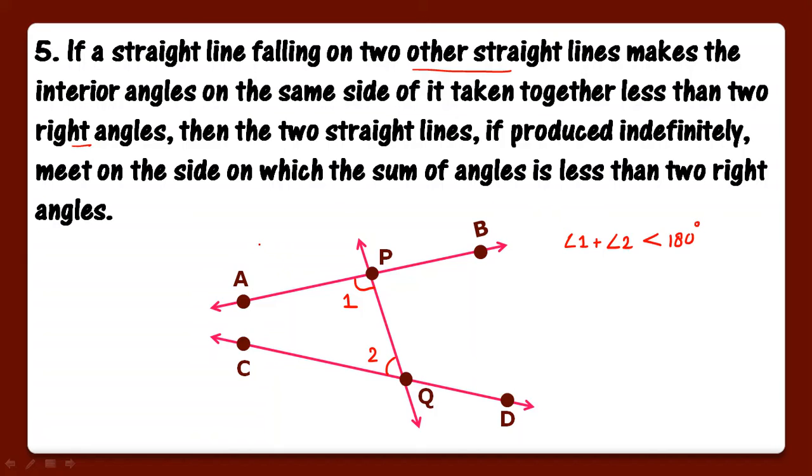Then the two straight lines, if produced indefinitely, if we produce these two straight lines AB and CD further, they will meet on the side on which the sum of angles is less than two right angles. So they will meet at this point. So this is our postulate five.